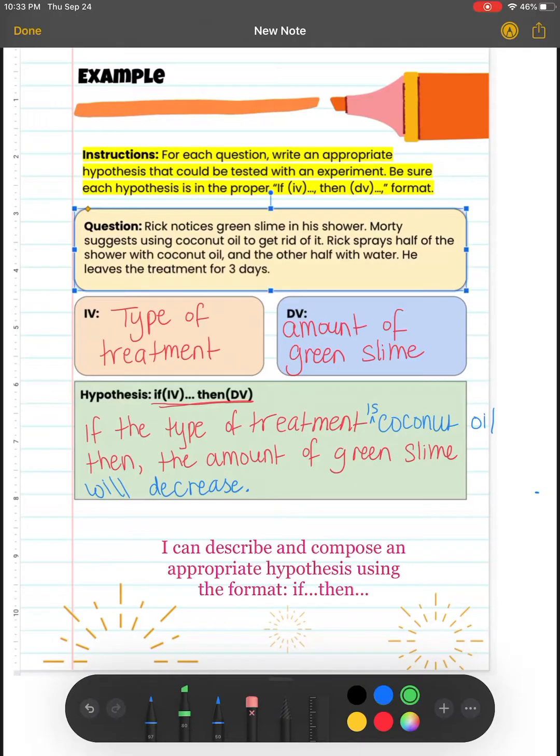So let's kind of review this hypothesis together. We know that after the word if we need to write the independent variable, so therefore the type of treatment is our independent variable. And then following the word then, we have the dependent variable. So the amount of green slime is our dependent variable. And as always, we have if independent variable, then dependent variable. And of course, we have to include very specific relationships.